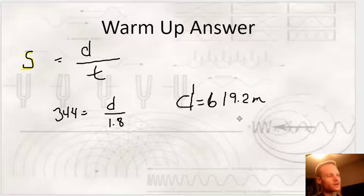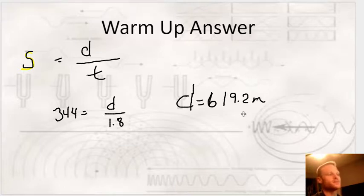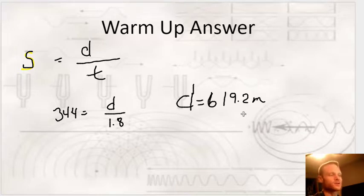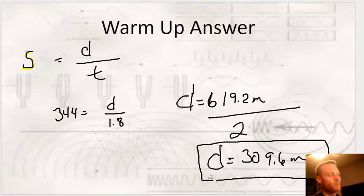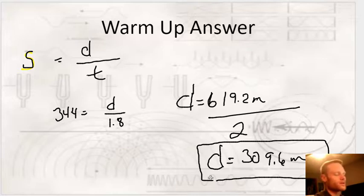Now the problem is that's not the answer. If you think about how an echo actually works — when you yell, your sound wave travels, hits an object, bounces off, and reflects back to your ear — this distance represents the total travel from your mouth to the rocky cliff and back again. So it's actually two times the distance to the cliff. We divide by two, giving the real answer of 309.6 meters. You've got to cut that distance in half. More than likely, there will be a question like this on the test next week.